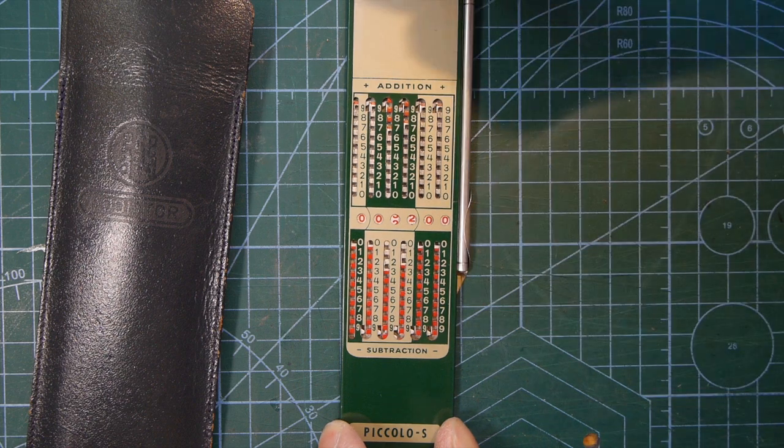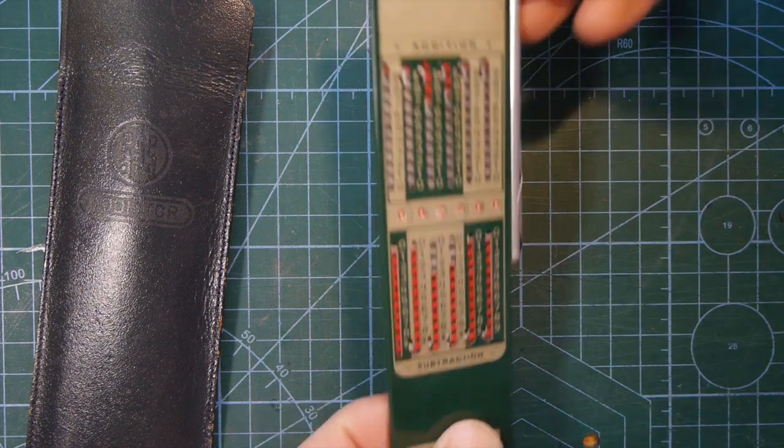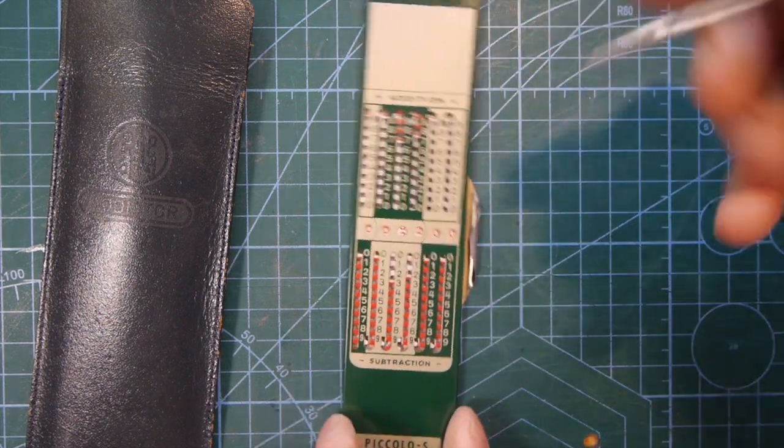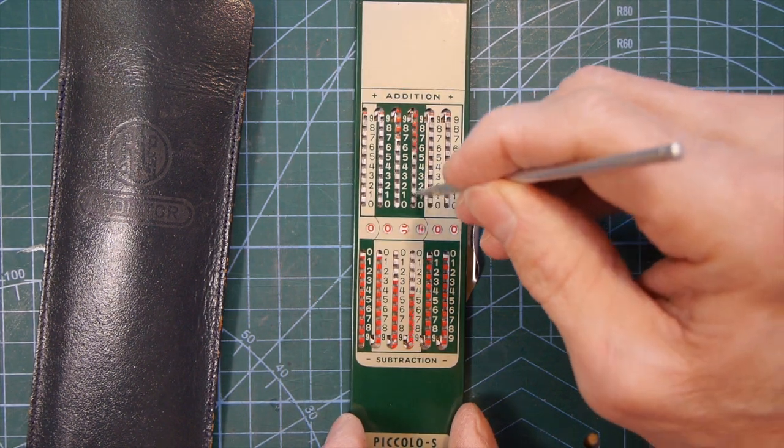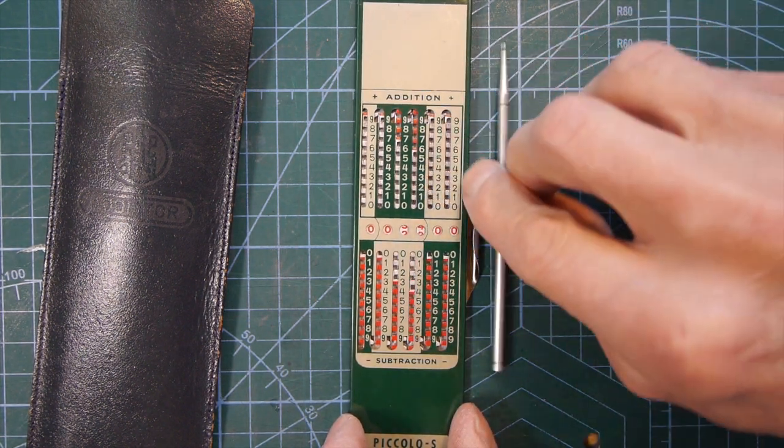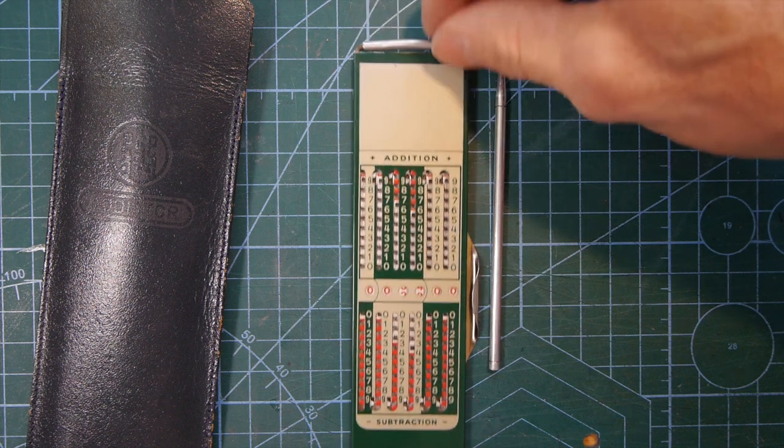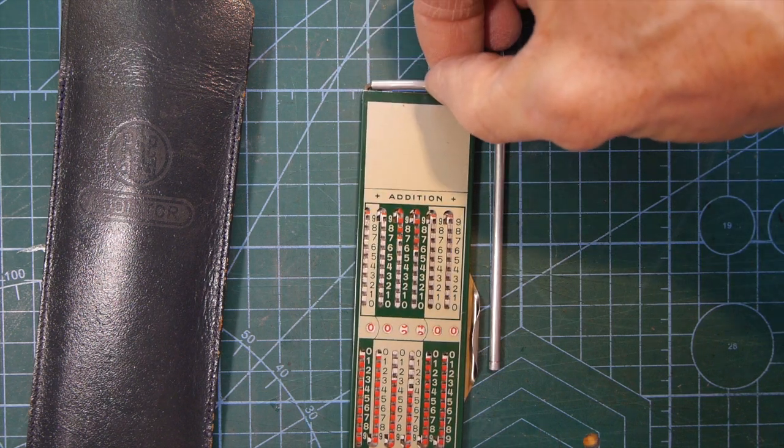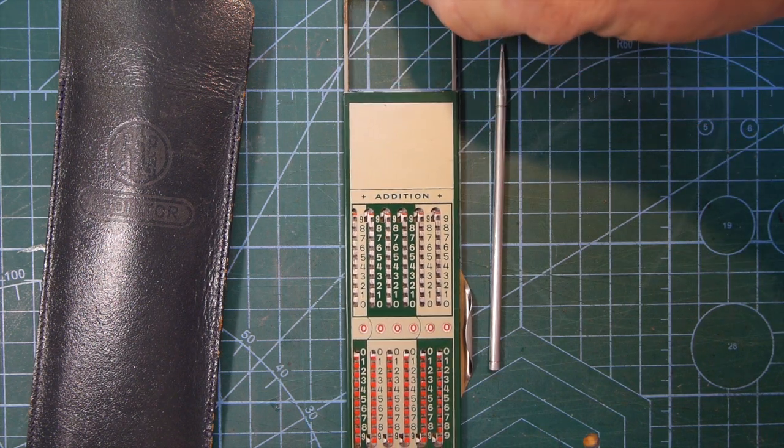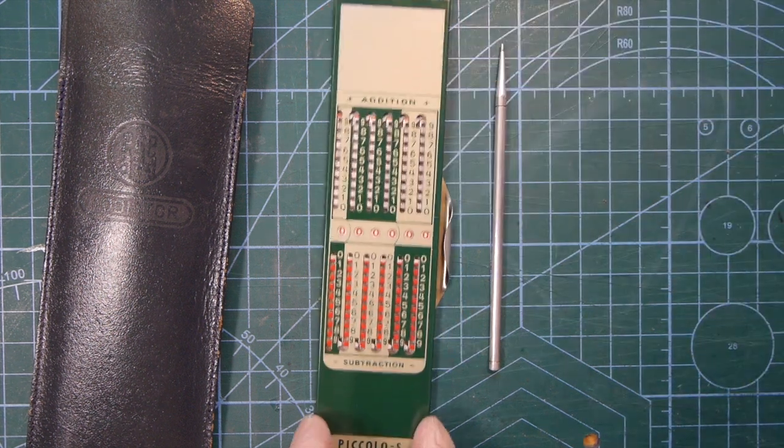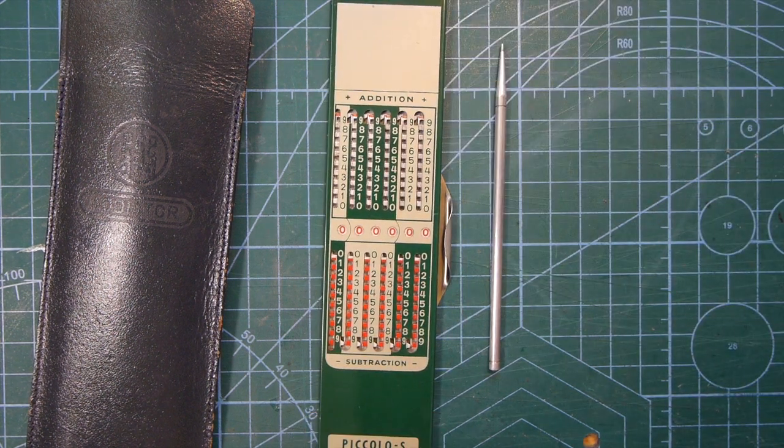It has a stylus, often lost, that comes off the side of the device and that's used for moving these sliders around inside the number windows. And then finally right at the top it has a bar that you can lift up and this is the reset bar. So let's have a look now at how you'd calculate with this.